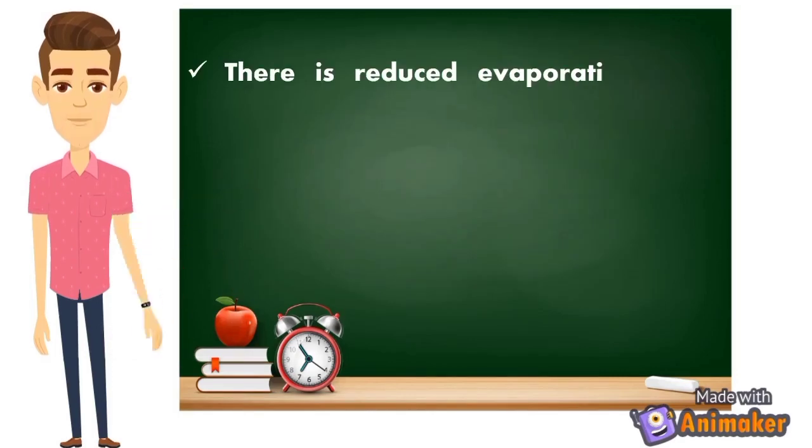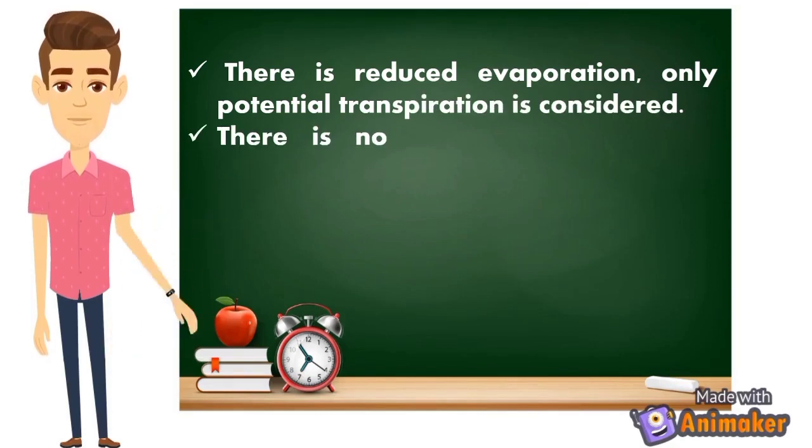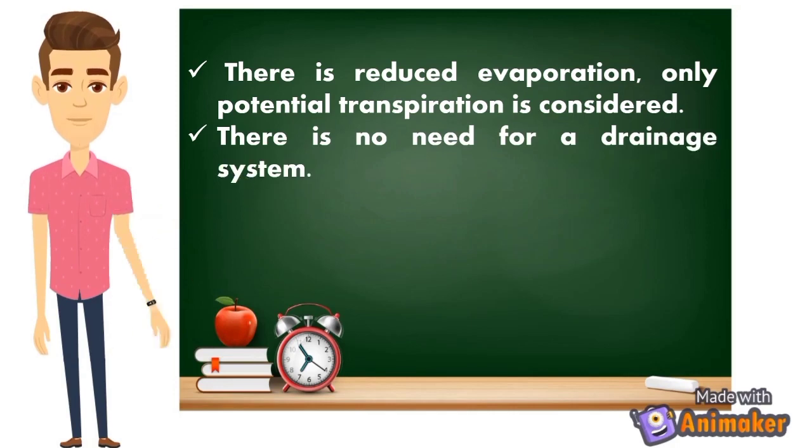There is reduced evaporation; only potential transpiration is considered. There is no need for a drainage system, so even if your field is flat, there's no problem. You don't need to dig or have a furrow system.